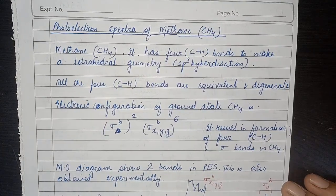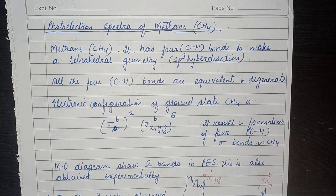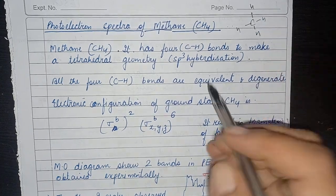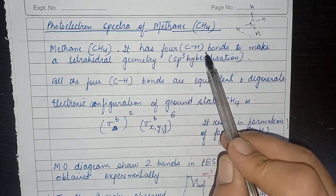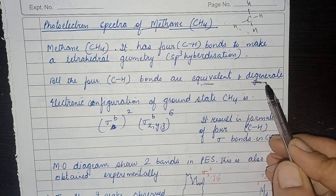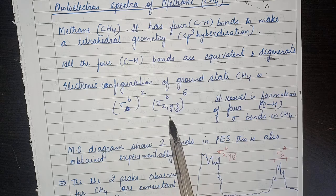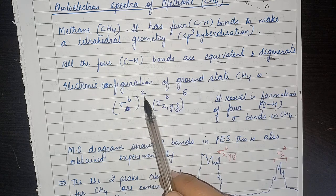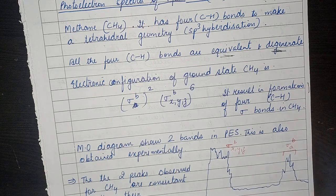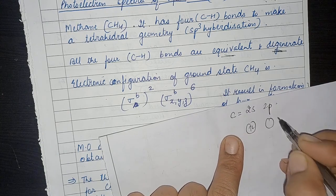After ammonia, we will see the photoelectron spectra of methane. Methane has carbon bonded to four hydrogen atoms, giving four equivalent C-H bonds with tetrahedral geometry and sp3 hybridization. These bonds are equivalent and degenerate, meaning they have the same energy. The ground state electronic configuration of methane is given as: σb² for the 2s-based bonding orbital, and σxyz bonding with 6 electrons for the p-based bonding orbitals.